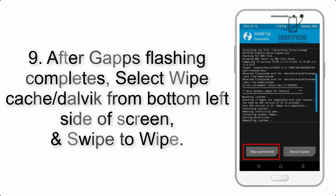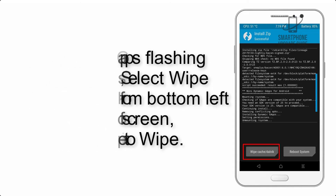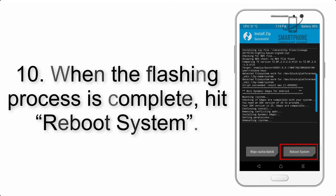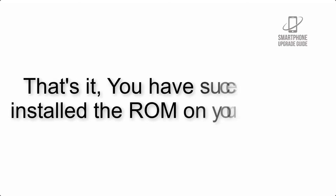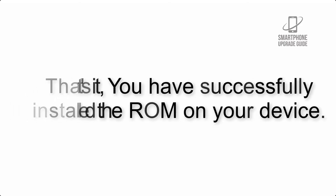Step 9: After GApps flashing completes, select Wipe Cache and Dalvik from the bottom left side of the screen and swipe to wipe. Step 10: When the flashing process is complete, hit Reboot System. That's it — you have successfully installed the ROM on your device.